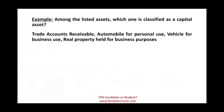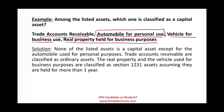Let's look at a warm-up example to identify which item is a capital asset. We have: accounts receivable, automobile for personal use, vehicle for business use, and real property held for business. The answer is the automobile for personal use. The trade account receivable is an ordinary asset. The vehicle held for business, assuming it's held more than a year, is Section 1231. Real property held for business, also assuming more than a year, is Section 1231.